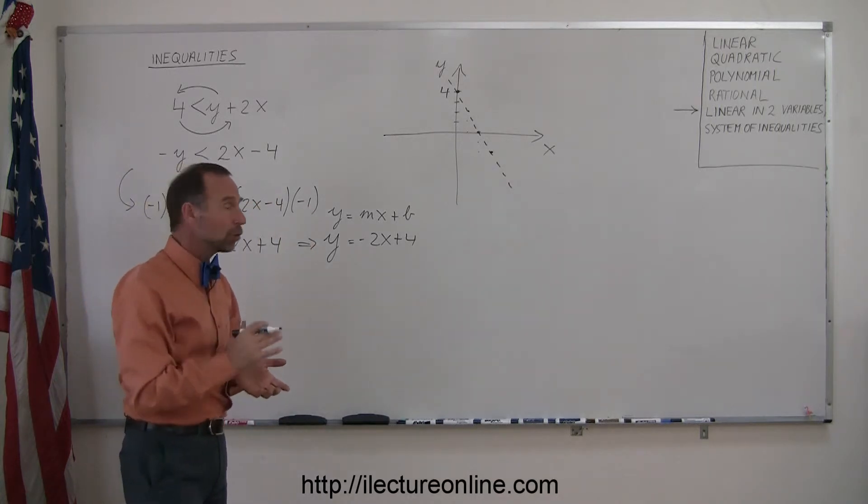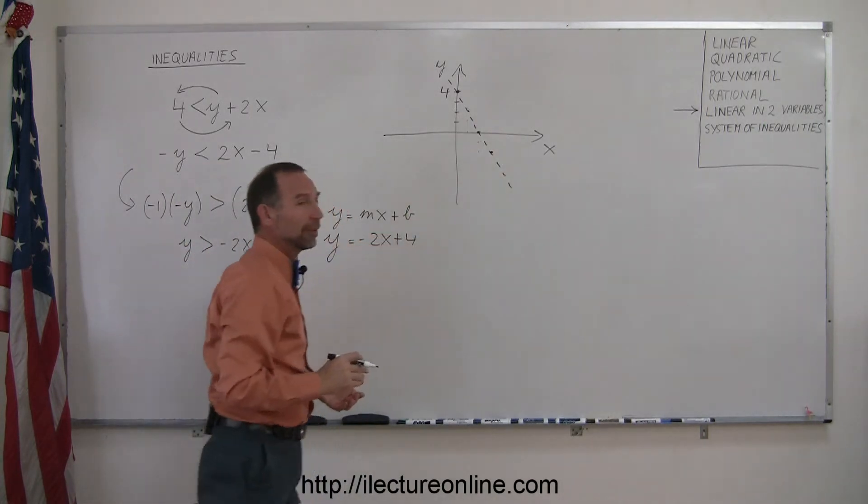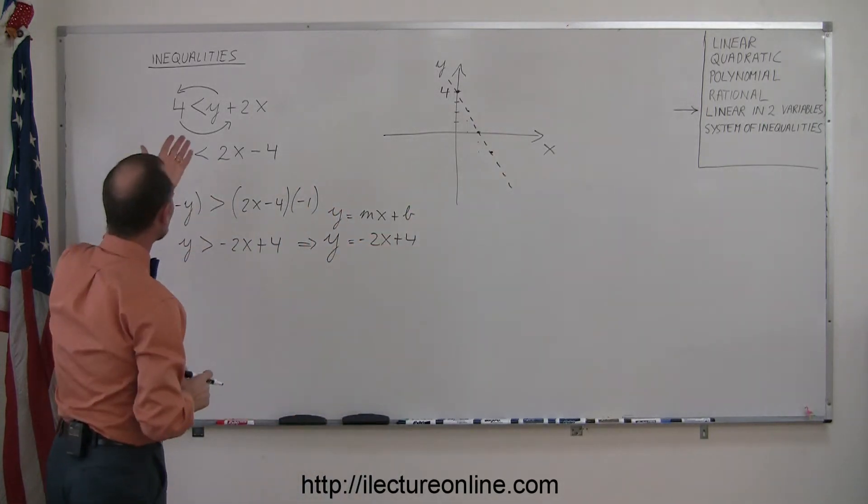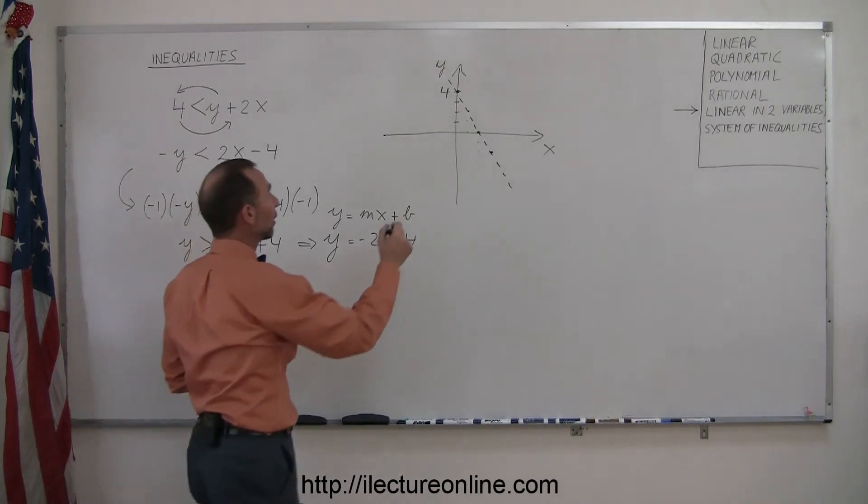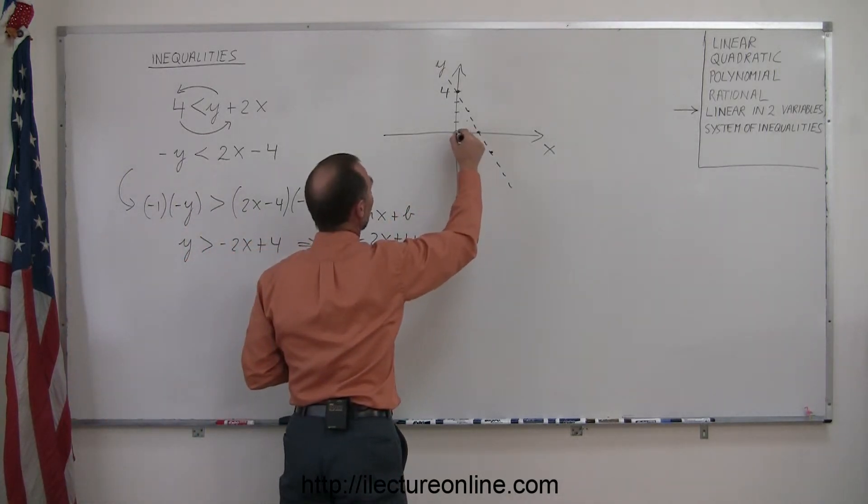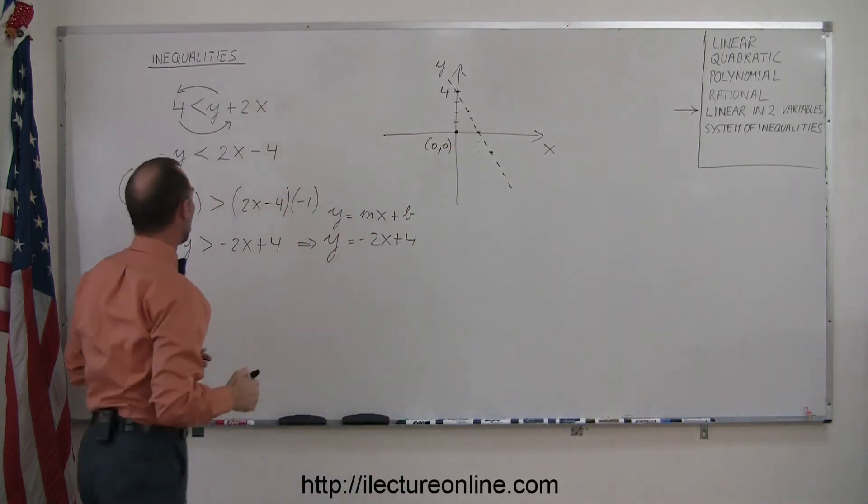Now to figure out which of the two regions, to the left or the right of that boundary, satisfies the inequality, we're going to try a test point. We take any point, but 0, 0 is always a good point to choose. Plug 0, 0 into the inequality.